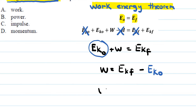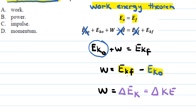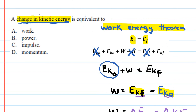When you take final kinetic energy and subtract initial kinetic energy, this is a change in kinetic energy — written as ΔKE. So Work = ΔKE, meaning option A is the best answer for this question, and this comes directly from the work-energy theorem.